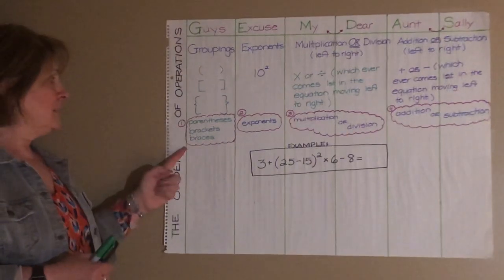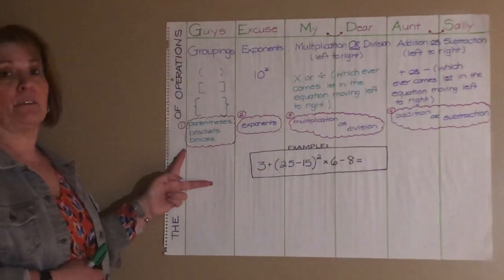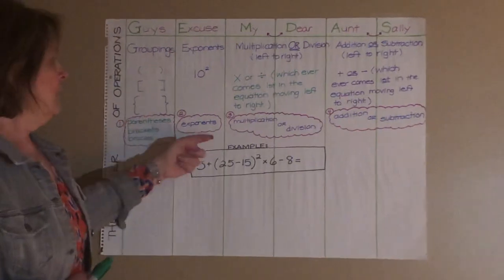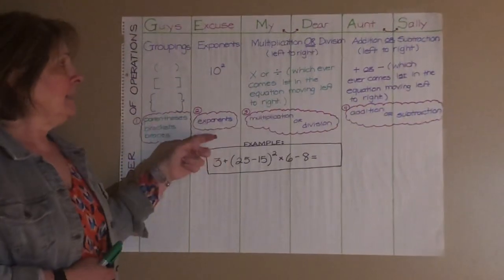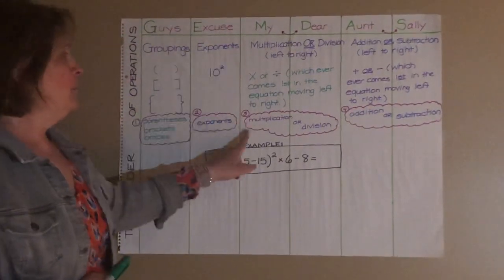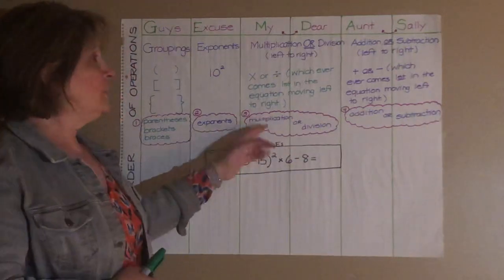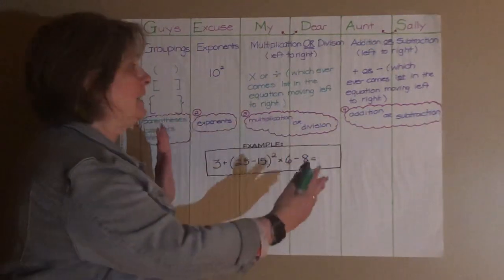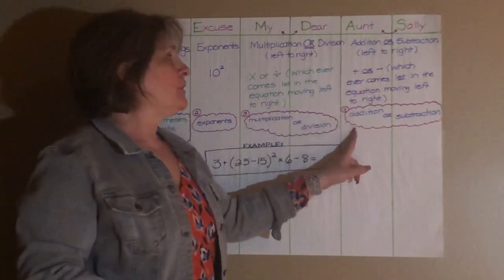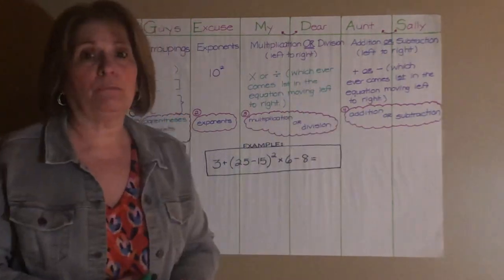For guys, parentheses, brackets, and braces, those are our groupings. For E, we do exponents next. Then we do multiplication or division. Again, left to right in the equation. Then addition or subtraction, left to right.